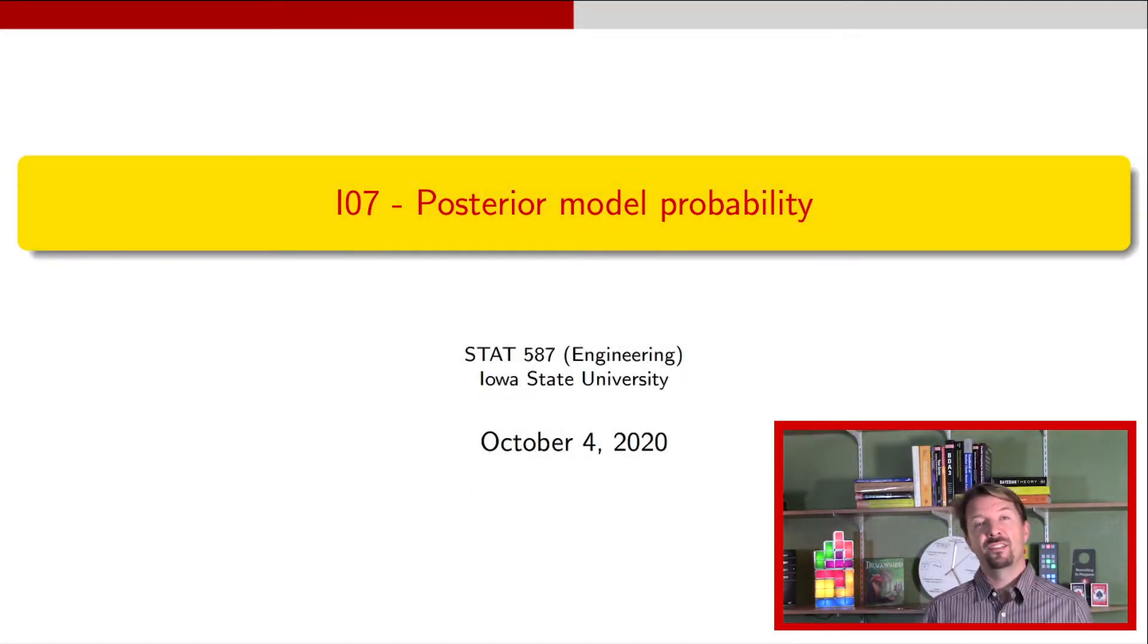Hi, I'm Dr. J and this is a video about Bayesian posterior model probabilities. It's actually going to be the first video in a three-part series and in this video we're just going to talk about what you do when your alternative hypothesis is a one-sided hypothesis.